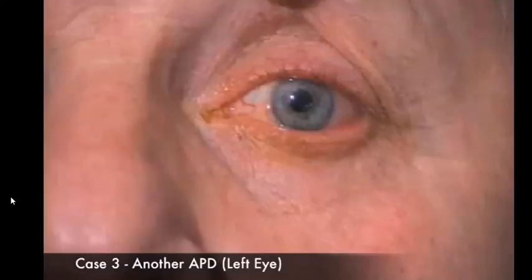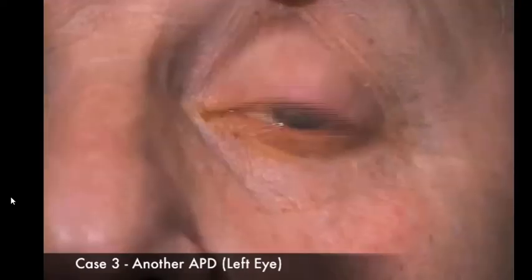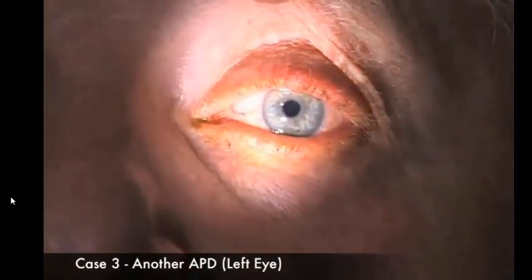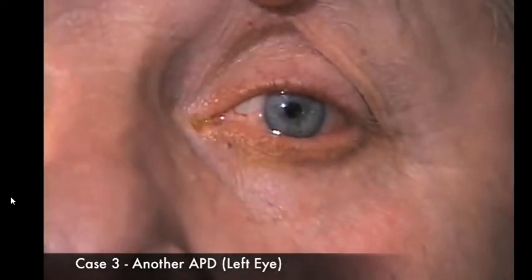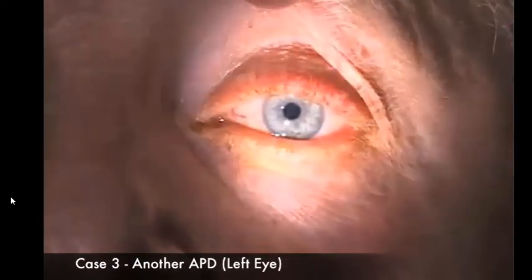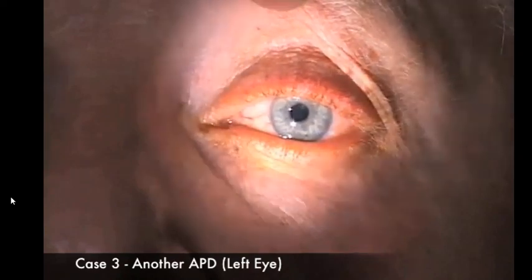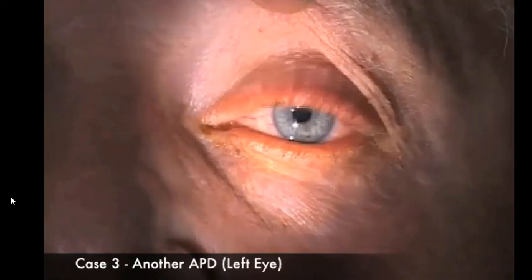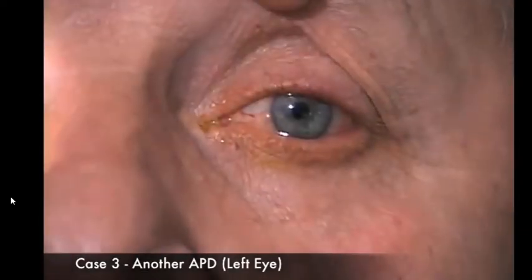Here in case 3, we will see another APD in the left eye. In this video, only the left eye will be shown and the room lights have been left on only for the purpose of videography. So, this is the left eye of the patient. When we shine light into the left eye, the left pupil appears to dilate. And when we shine light into the right eye, the left pupil appears to constrict. So, it looks as though this patient may have an APD in the left eye.